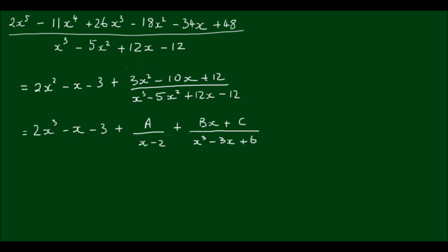So we have reduced the original fraction to a polynomial plus a proper fraction, and then decomposed it into partial fractions. The coefficients are a equals 1, b equals 2, and c equals negative 3. I hope this video has helped you understand how to handle improper fractions and irreducible factors. Please give a like if you found this useful, subscribe to my channel, and if you have any questions please ask by commenting below. Best of luck with your math studies and I'll see you next time.